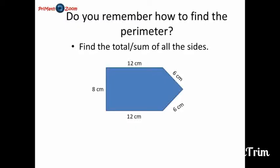So, in order to find the parameter of a figure like this, we need to be adding five lengths. So, we will add 12 centimeters plus 6 centimeters plus 6 centimeters plus 6 centimeters plus another 12 centimeters plus 8 centimeters. And that would give us the total, which is 44 centimeters. And that represents the parameter.